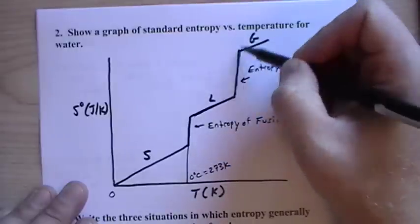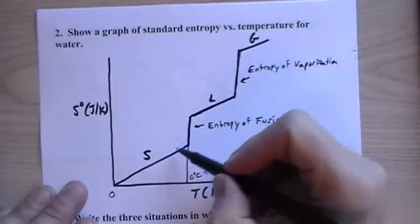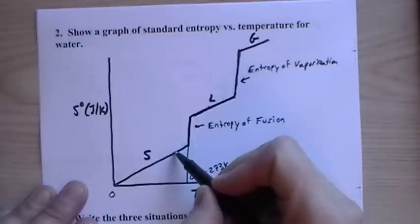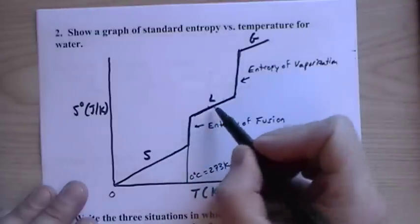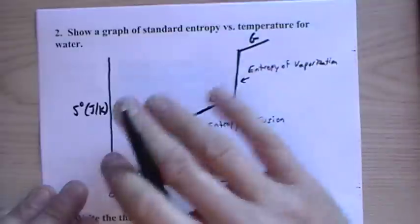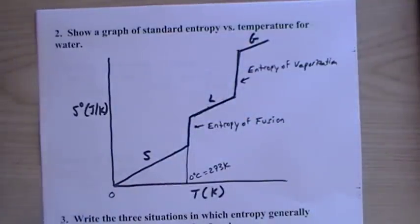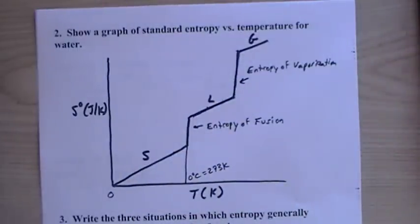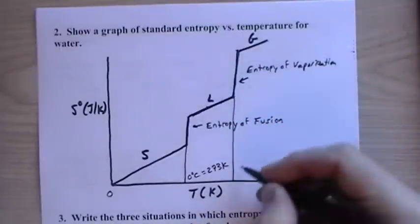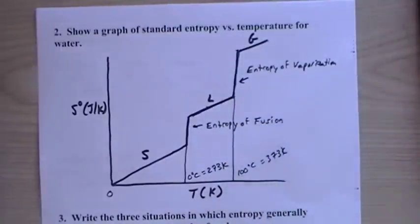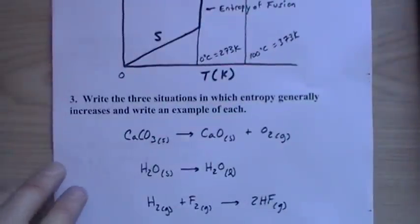The jump to gas is larger than the solid-to-liquid jump because molecules go from tumbling over each other in a liquid to being completely free to move in the gas phase — a huge increase in entropy. You should recognize this curve and be able to draw and label all its parts.